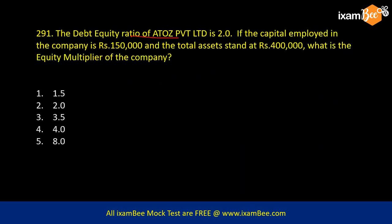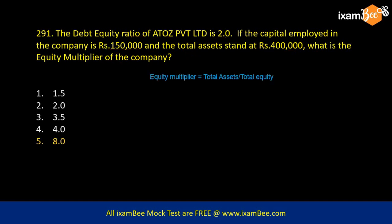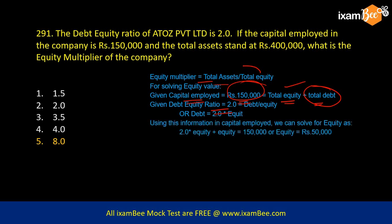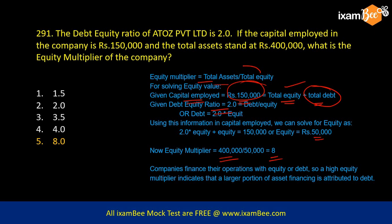Here is a numerical: the debt equity ratio of A to Z Private Limited is 2. If the capital employed in the company is 150,000 and total assets are 400,000, what is the equity multiplier? Equity multiplier equals total assets divided by total equity. Capital employed of 150,000 equals total equity plus total debt. Since the debt equity ratio is 2, this 150,000 has 2 parts debt and 1 part equity, so equity equals 50,000. Therefore equity multiplier equals 400,000 divided by 50,000, which is 8. A high debt equity ratio means more leveraging — here assets are 8 times the equity.